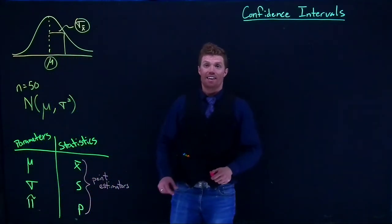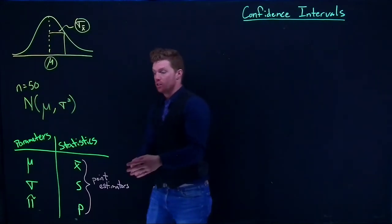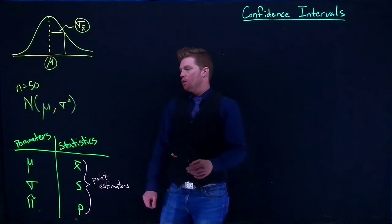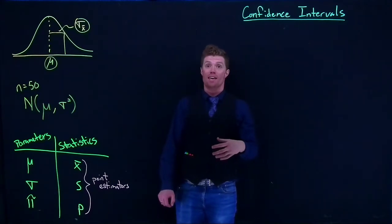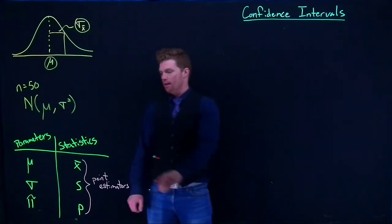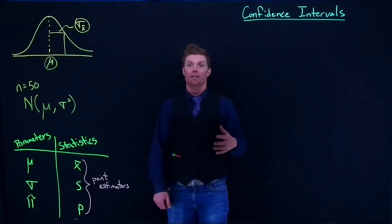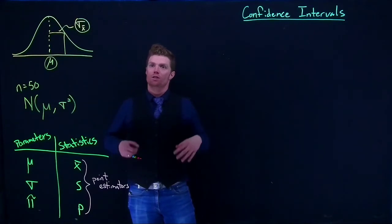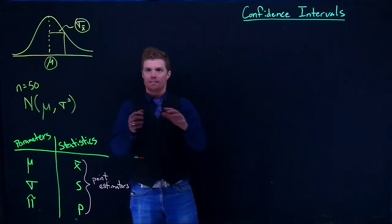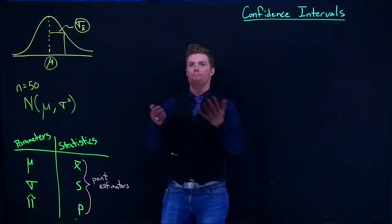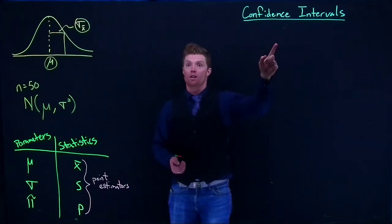Each of these sample values — x-bar, s, and p — also go by another name: these are called point estimators. When we take a sample, we're not going to get the actual true mean; the point estimators are our best guess of what is going on. This is starting to get into what we call inferential statistics, where instead of looking at probabilities, we take a sample and try to make some conclusion about the population.